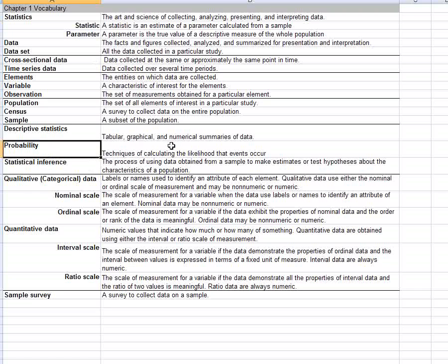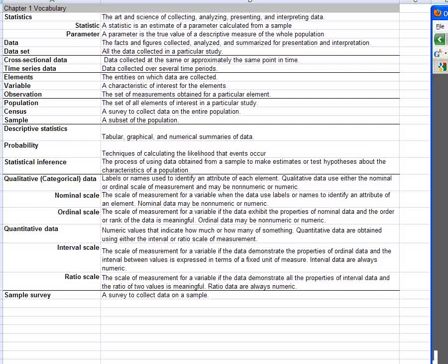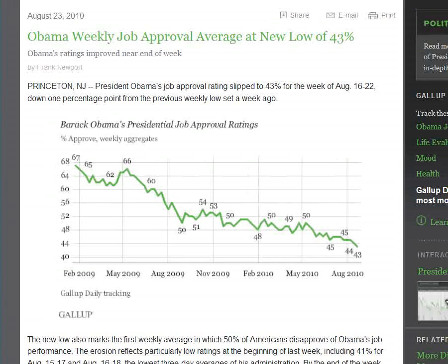So we're going to do a lot of probability later on. But the main reason for studying probability is so that when we get to the part talking about statistical inference, that is using a sample to make a statement about what's likely going on in the entire population, you'll see how probability is important. Now let me just give a quick example of statistical inference.